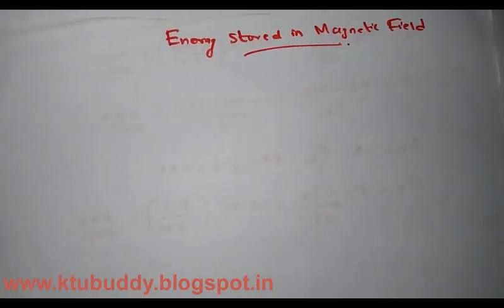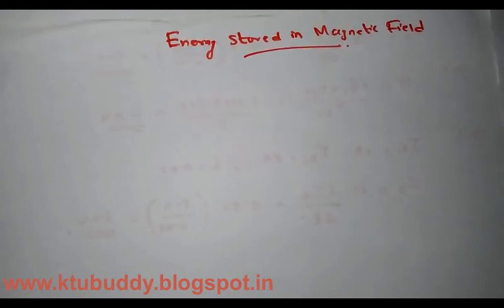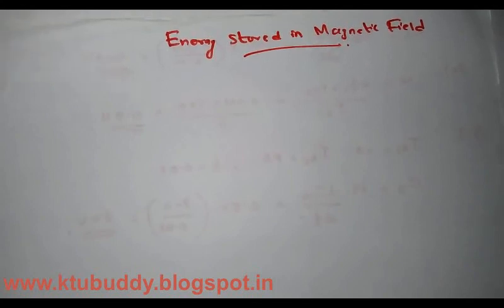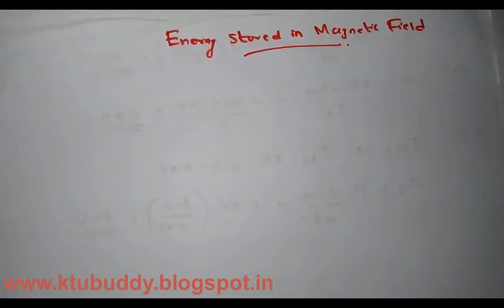There is another topic specified in the syllabus: energy stored in a magnetic field. We know that the three passive components are resistors, capacitors, and inductors. A resistor opposes the flow of current, an inductor opposes the change in current, and a capacitor opposes the change in voltage.